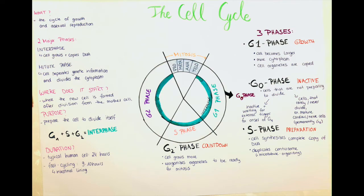A question I often asked myself is: how long does the cell cycle last? From the literature, a typical human cell takes around 24 hours to complete the cell cycle. There are also fast-cycling cells which only need nine to ten hours — this depends on the cell type and tissue. In the intestinal lining, we have these fast-cycling cells which divide more rapidly, usually because they are exposed to more noxious particles or are more often worn off.